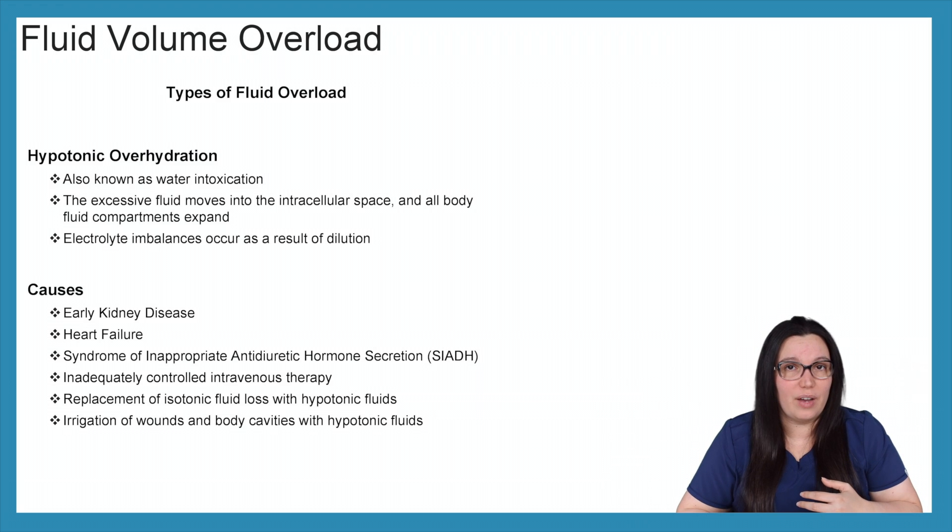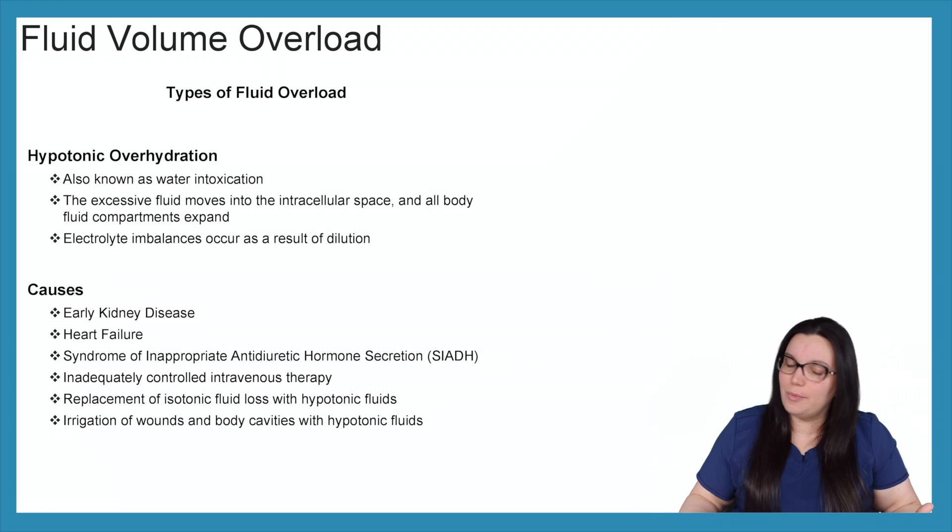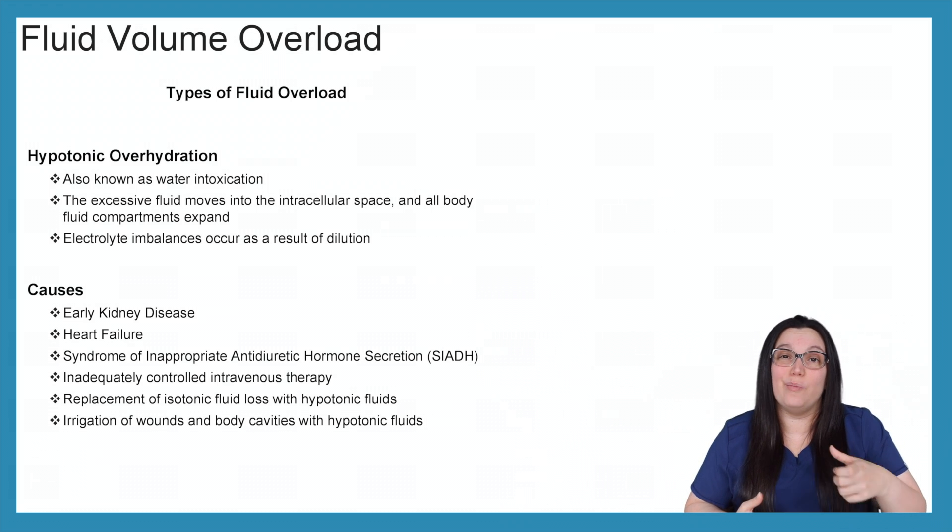So causes of this early kidney disease can be a cause of hypotonic overhydration. You can have heart failure, syndrome of inappropriate antidiuretic hormone secretion, also known as SIADH. Inadequately controlled intravenous therapy again, replacement of isotonic fluid loss with hypotonic fluids. You definitely don't want to do that. As well as irrigation of wounds and body cavities with hypotonic fluids.